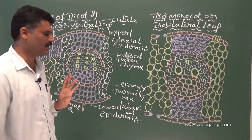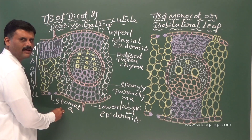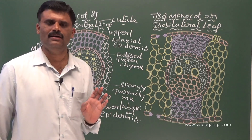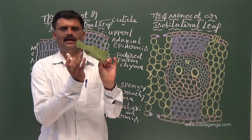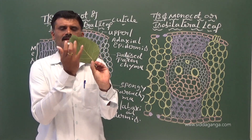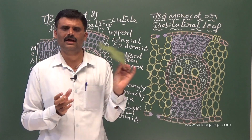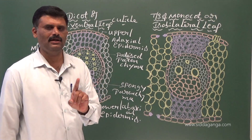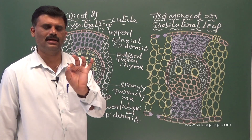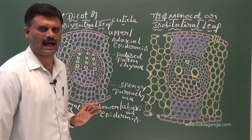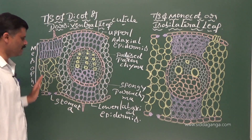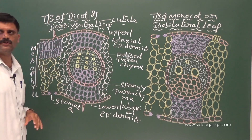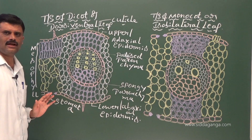In dicot leaf, stomata are located towards lower epidermis. Lower surface has a large number of stomata; upper surface has less. So dicot leaves are hypostomatic leaves, especially for plants present in mesophytic habitat. The mesophyll region is differentiated into palisade parenchyma located towards upper epidermis and spongy parenchyma located towards lower epidermis.